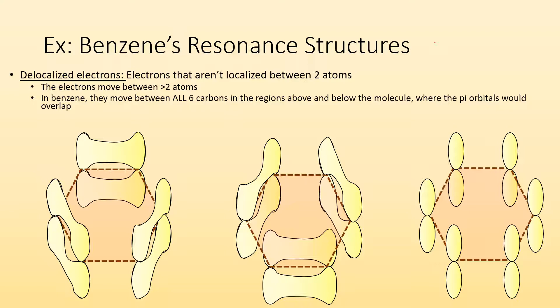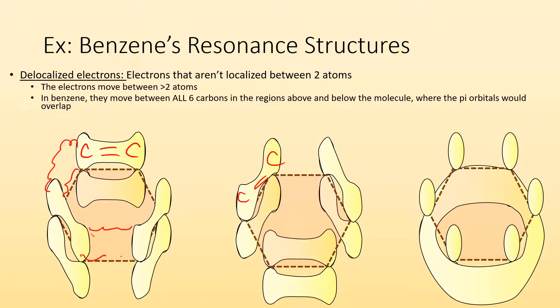They move between all six carbons in the regions above and the regions below the molecule where the pi orbitals overlap. So what ends up happening is we have a whole region under that molecule. All of those bloop together to give you one big region above and below the molecule where those electrons can move across the whole molecule. They're delocalized. So we end up with electrons below and also electrons above that molecule.